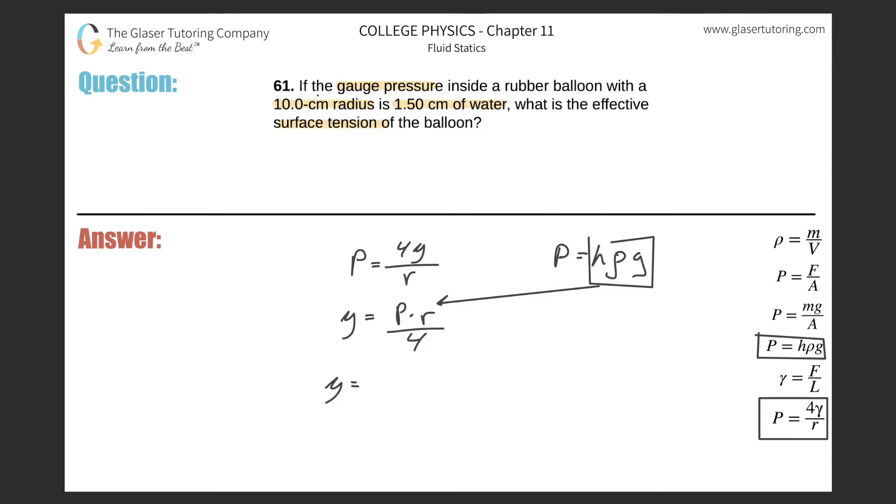So now it looks like this: the surface tension will be equal to the height multiplied by the density multiplied by gravity multiplied then by the radius all divided then by four. So let's plug in the values. Okay, the height in meters of the water column.